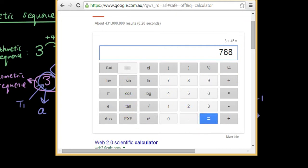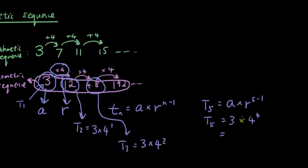And the answer is 768. So the answer is 768, which is the same as you can see in this sequence. If we multiply this by 4, we will get 768 as well.